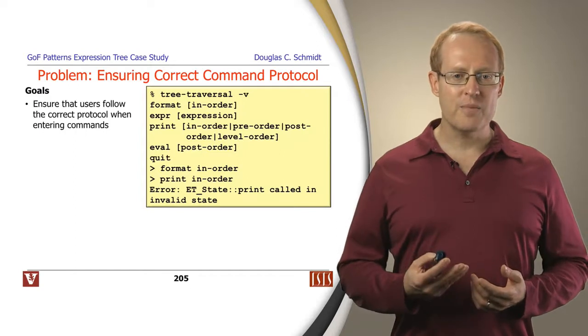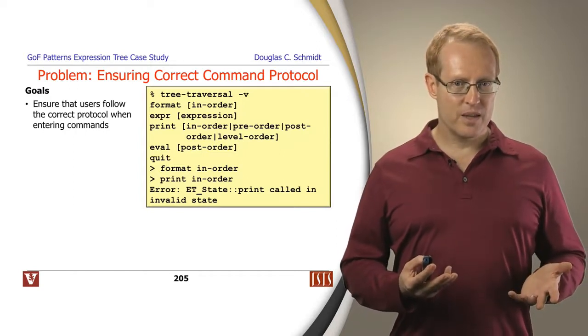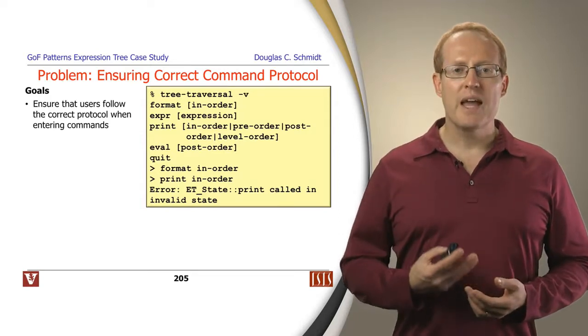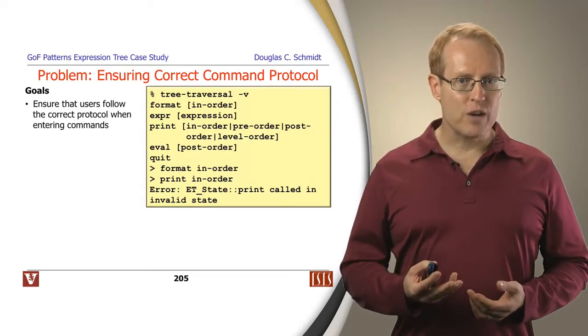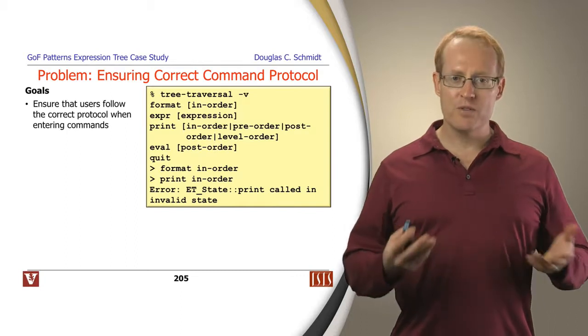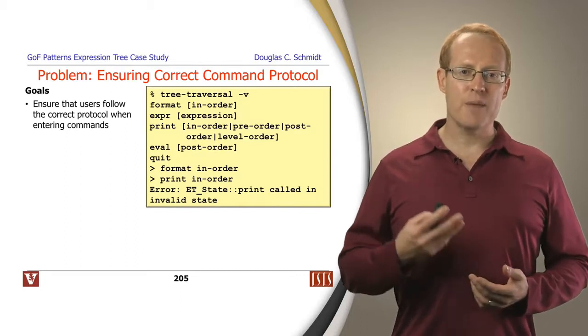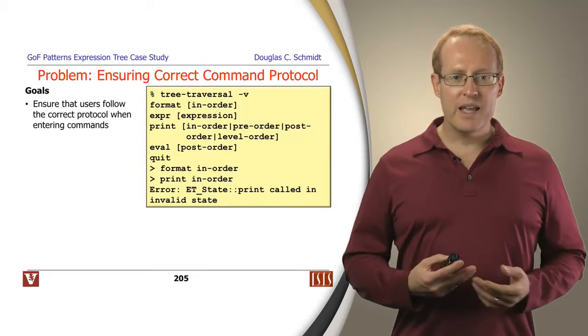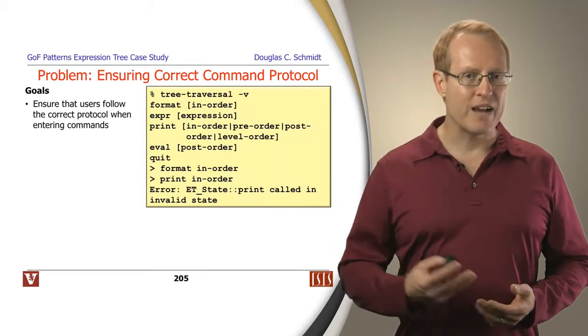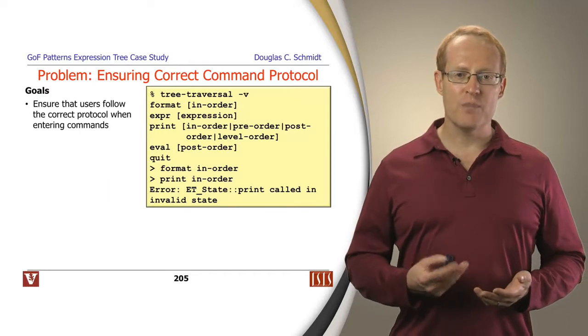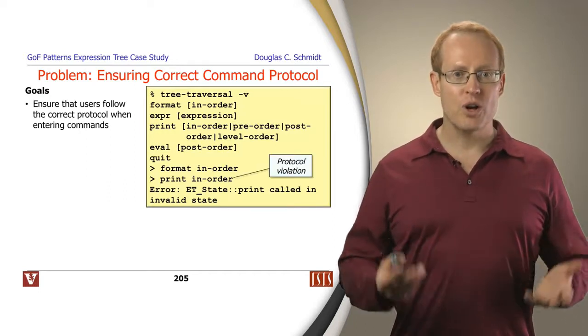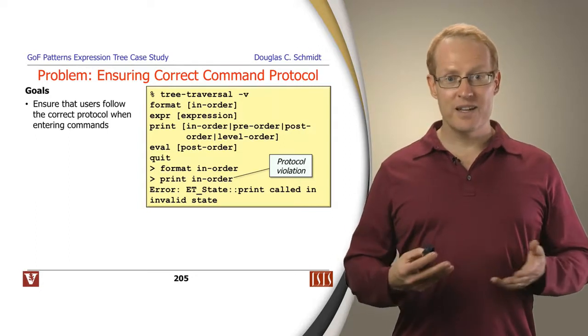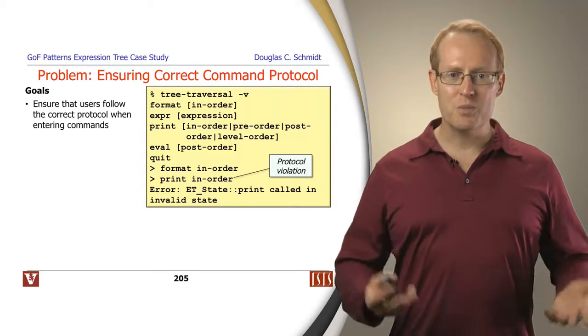In other words, we want to make sure they obey the protocol of command ordering. Here's an example. We might start out and run the command processing app, and if we ran it in verbose mode a menu of commands would show up. If we typed the format command and said we want to read in the format using in order, and then we tried to print right after that, that would be a good example of a protocol violation.